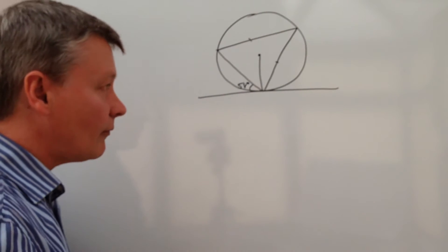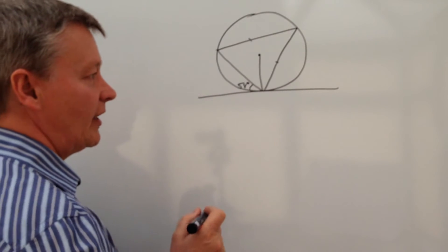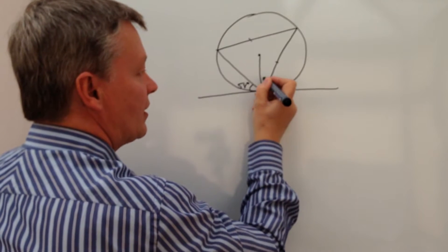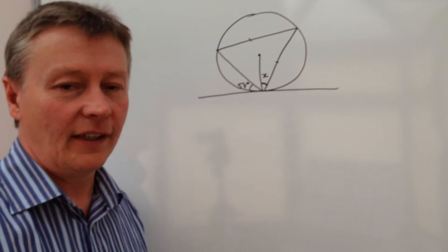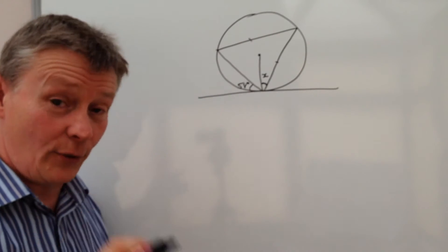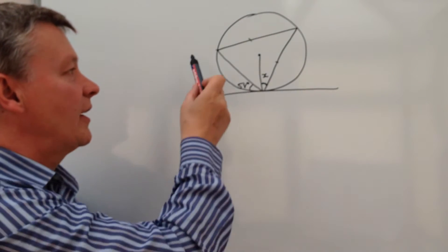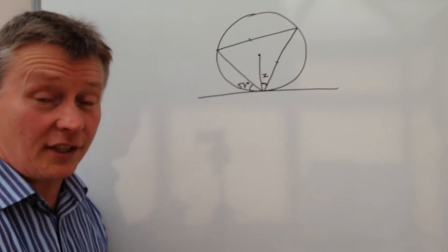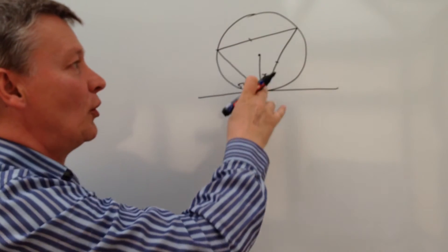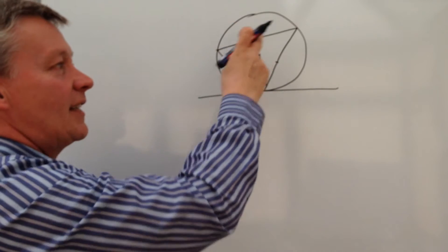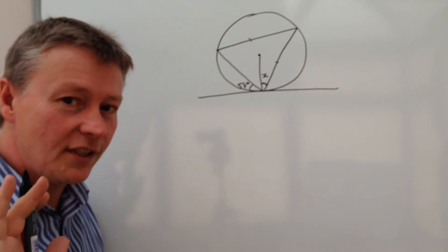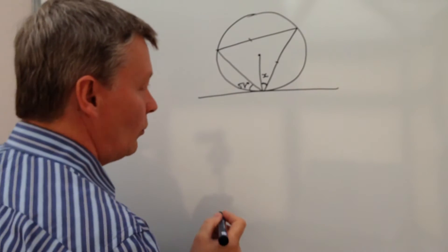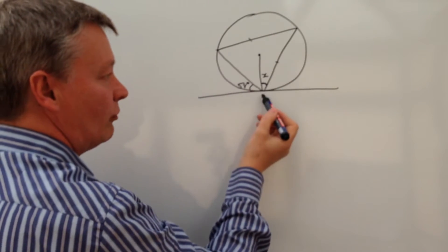So what we're being asked to find out is the value of this bit here. I'm just going to call it X. Now on the particular question you get, you'll get things like PQT and LPR and all this sort of stuff. My best advice is actually just to redraw the whole thing and ignore the letters that they put on these types of questions.